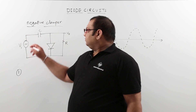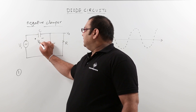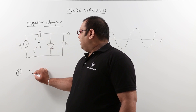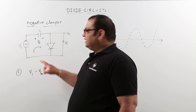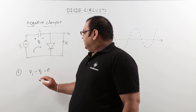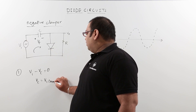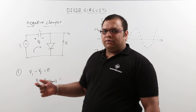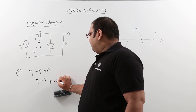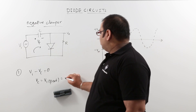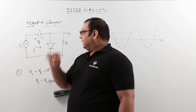Taking the capacitor voltage as Vc with plus and minus polarity, and writing the loop equation: Vi minus Vc minus the output voltage equals zero. When the diode is conducting, the output is zero, so Vc equals Vi peak, which for the positive half is plus Vm. Therefore, the capacitor charges to plus Vm.